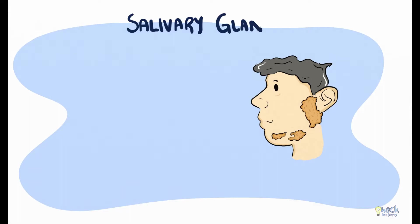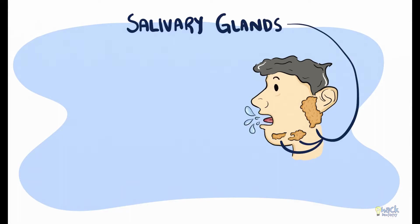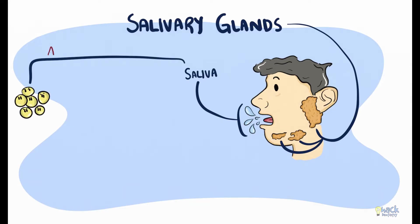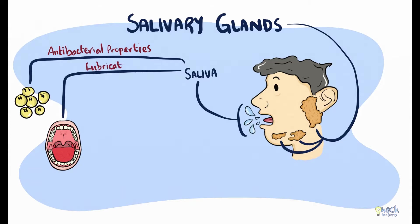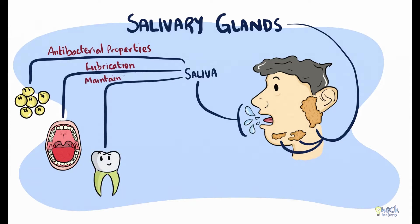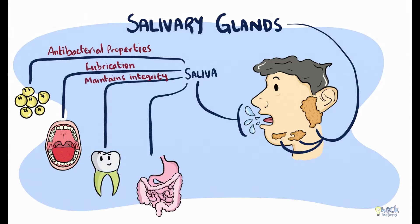Salivary glands are exocrine glands present in the oral cavity whose function is to secrete saliva. Saliva is a multifunctional fluid which has antibacterial proteins, lubricates the oral mucosa, maintains the integrity of teeth, and helps in digestion.